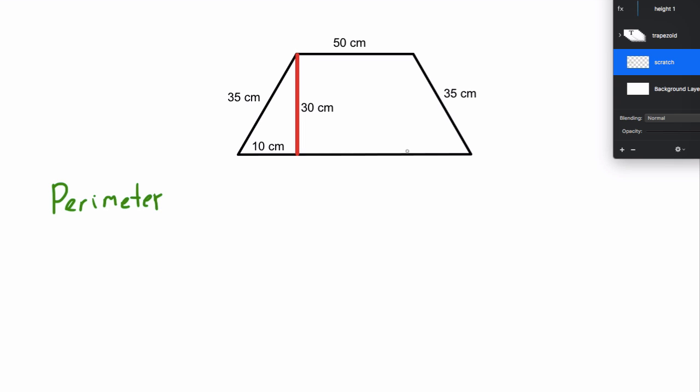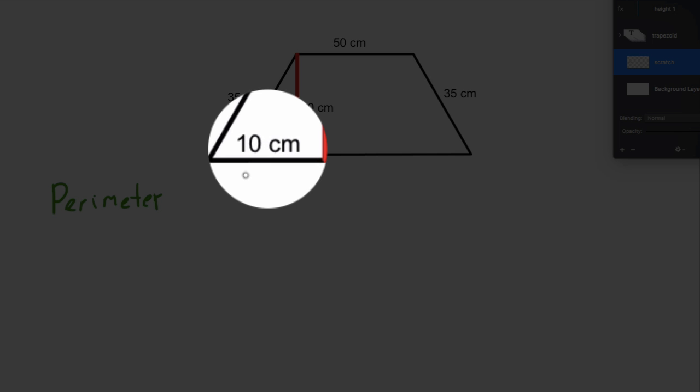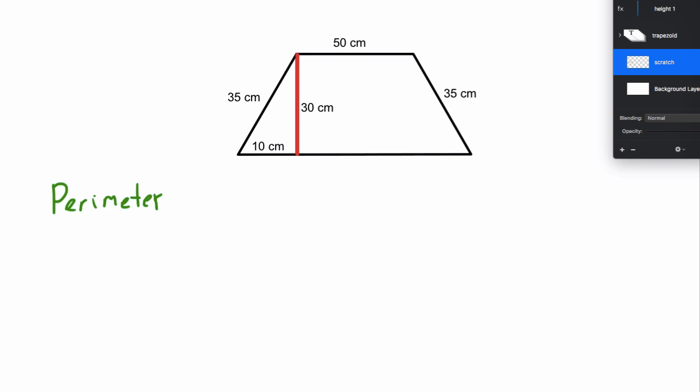I know it's an isosceles trapezoid because of 35 centimeters on each side, which is going to be helpful. And I do know that this is 10 centimeters. So what I want to do is break this up into three pieces. Instead of having one trapezoid, I want to have two triangles and a rectangle.